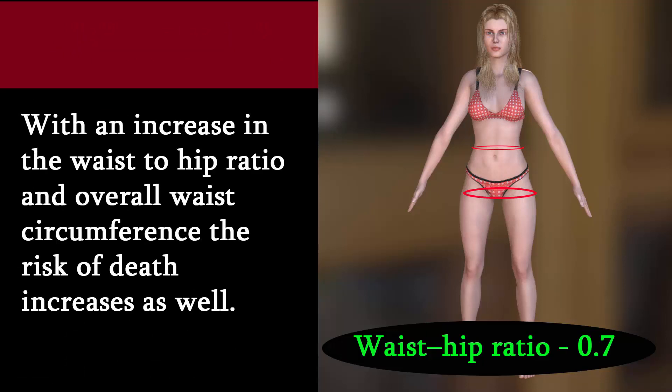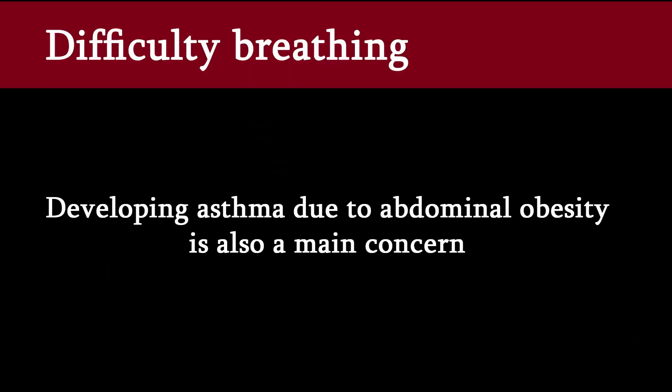Central obesity is associated with a statistically higher risk of heart disease, hypertension, insulin resistance, and type 2 diabetes. With an increase in the waist-to-hip ratio and overall waist circumference, the risk of death increases as well. Developing asthma due to abdominal obesity is also a main concern.